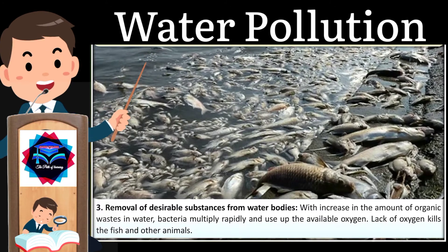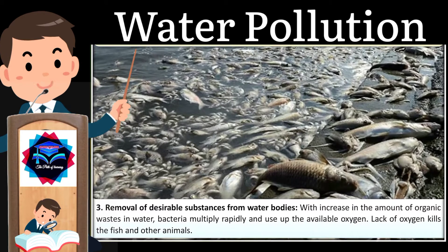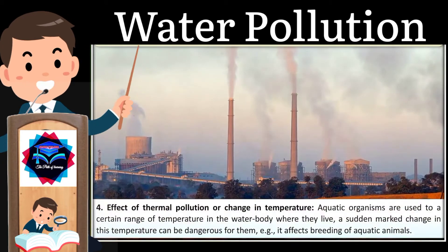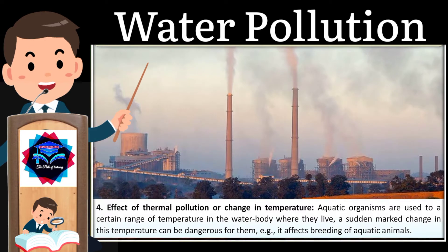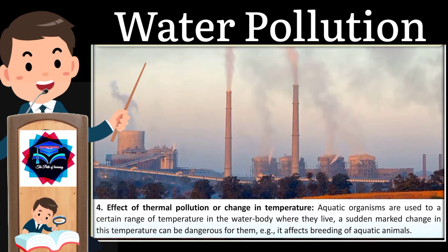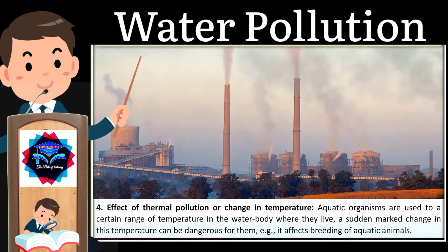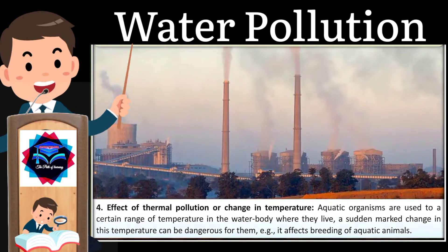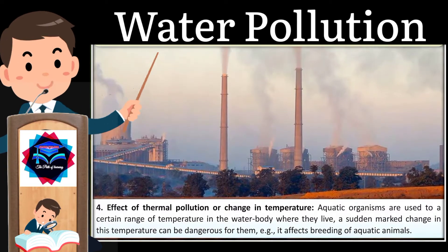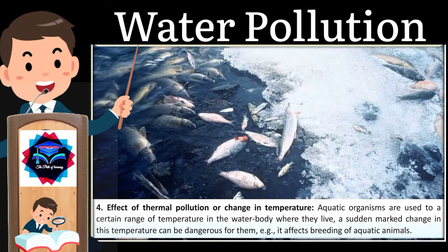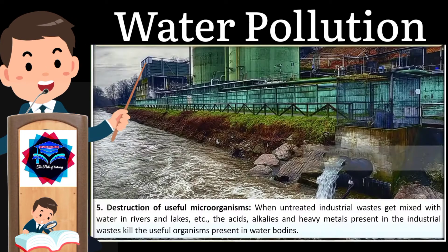Lack of oxygen kills fish and other animals. Four, effect of thermal pollution or change in temperature — aquatic organisms are accustomed to a certain range of temperature. A sudden marked change in this temperature can be dangerous for them; for example, it affects the breeding of aquatic animals.